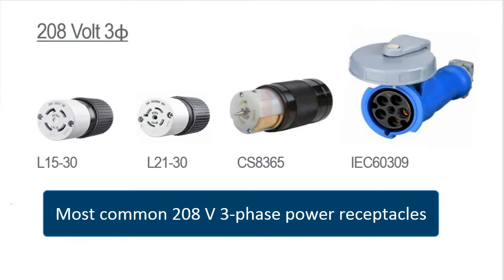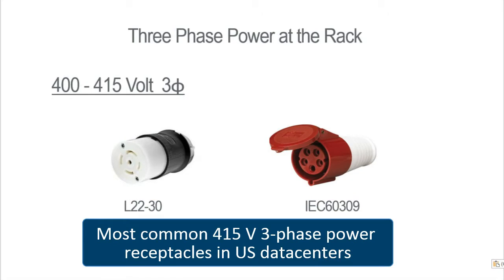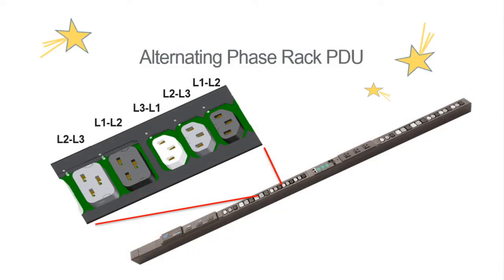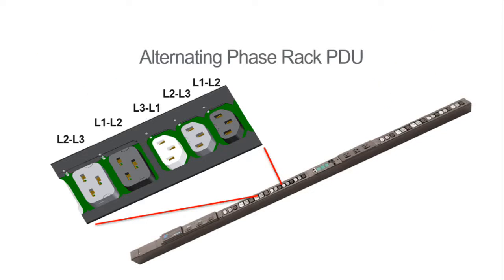Take a look at the most common 208-volt three-phase power receptacles that you'll find in data centers — you're probably familiar with them. And these are the most common 415-volt three-phase power receptacles you'll find in U.S. data centers. Now let's move to the PDUs. This illustration shows that a conventional three-phase rack PDU has its outlets grouped by phase, or phase pair, in three to six distinct locations along the length of the PDU. In contrast, meet the star of this video: an alternating-phase rack PDU, where the phase of the outlets alternates every outlet.